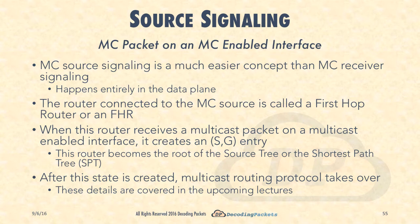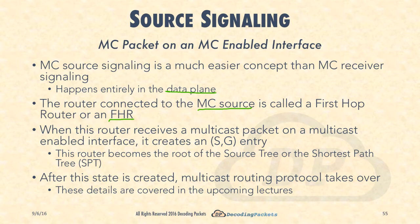What's really happening here? There is a router connected to the multicast source — the entry point to the multicast network connected directly to the multicast source. This is called the first hop router, or FHR. You'll see this term used over and over again, so it's good to get familiar with it. First hop router: the router connected to the multicast source.